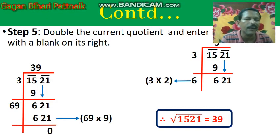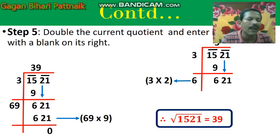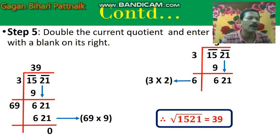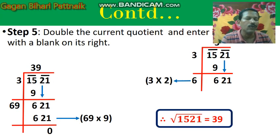Here I have written 9. After 6, I have written 9, and it became 69. 69 multiplied by 9 — because I have written 9, that's why I will multiply it by 9. So 69 multiplied by 9 is equal to 621. Now you see, 621 minus 621 is equal to 0. So we got the remainder 0.